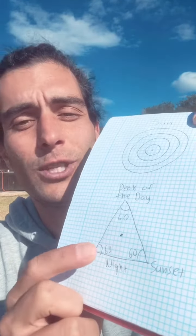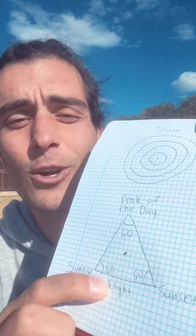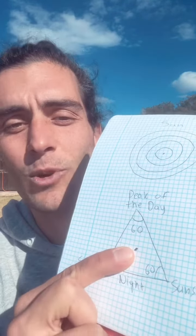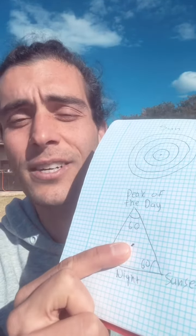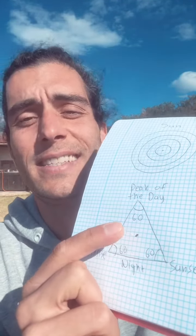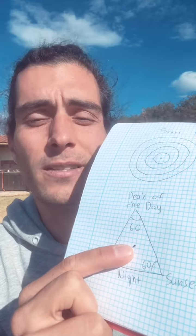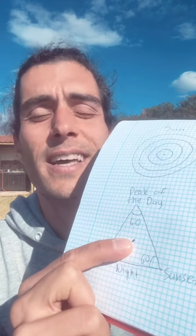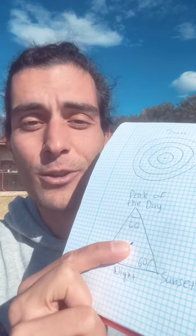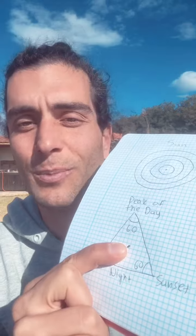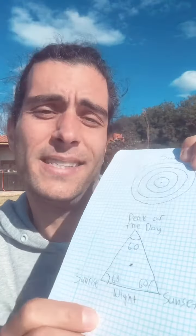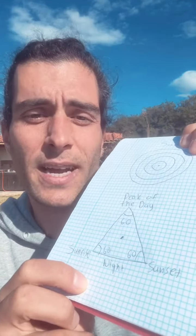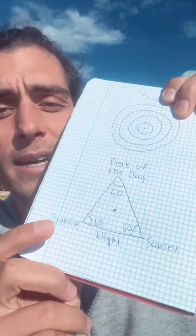Now if we see time from a certain perspective of Earth using the triangle, then my center is not the Sun anymore — my center is the geographical point on Earth that I'm experiencing the day and the night.